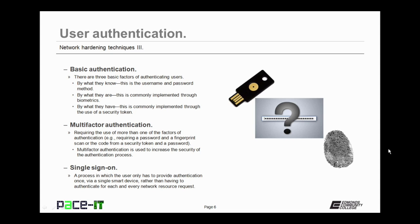Let's talk about basic authentication of the user. There are three basic factors for authenticating users. There's by what you know — this is the user and password method. By what you are — this is commonly implemented through biometrics. And finally, there is by what you have — this is commonly implemented through the use of security tokens. These are the three basic factors for authenticating users.